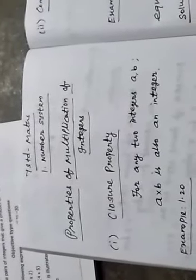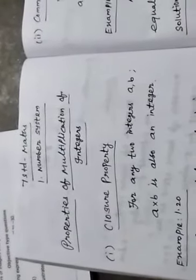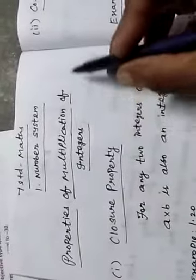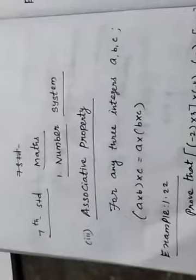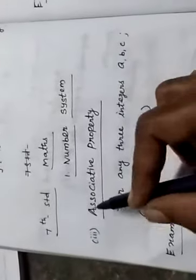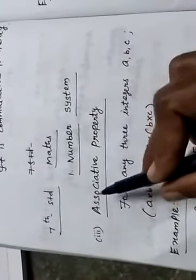Hi everyone. In the previous class we saw about properties of multiplication of integers — closure property and commutative property. Today we are going to learn about the third property: associative property.